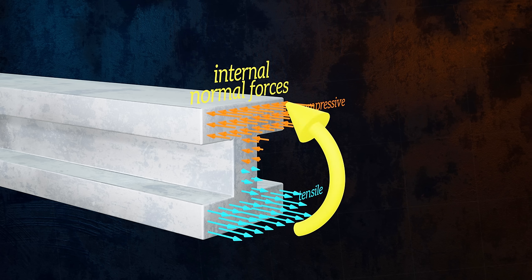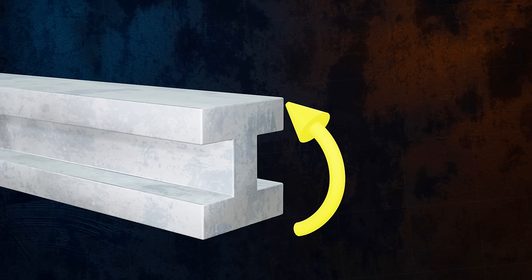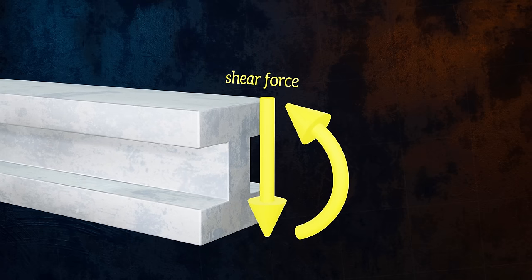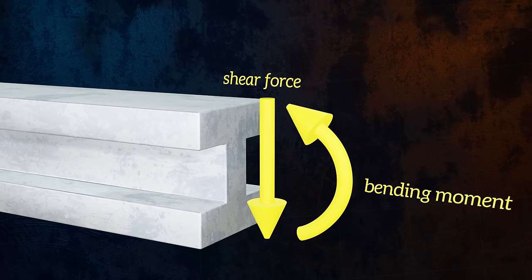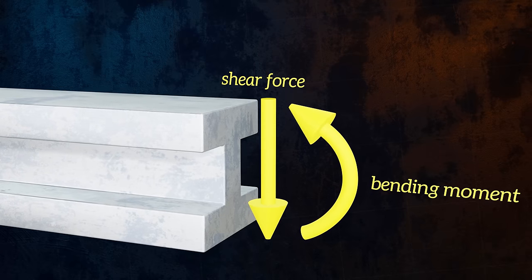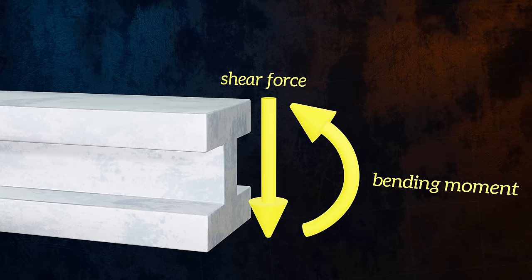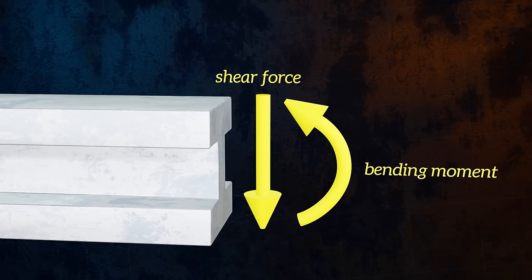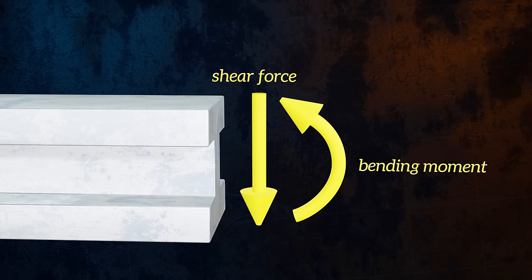This means we can conveniently represent the internal forces acting on the beam cross-section using just two resultants: one shear force, which is a resultant of the vertical internal forces, and one bending moment, which is a resultant of the normal internal forces. Drawing the shear force and bending moment diagrams is just figuring out what these internal forces are at each location along the beam. These resultant shear forces and bending moments will depend on the loads acting on the beam and the way in which the beam is supported.